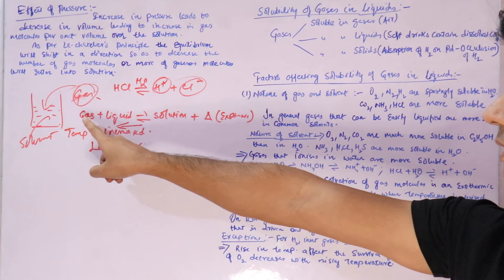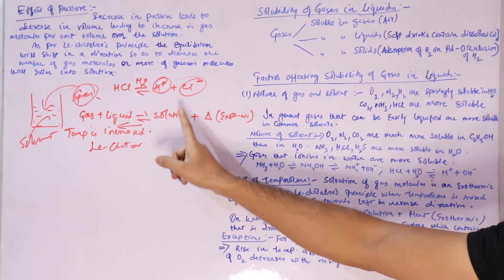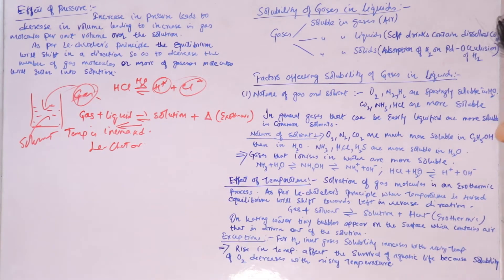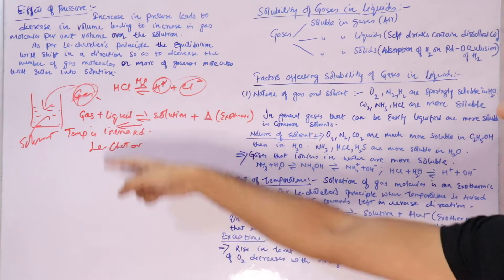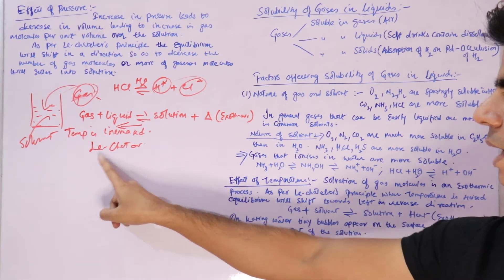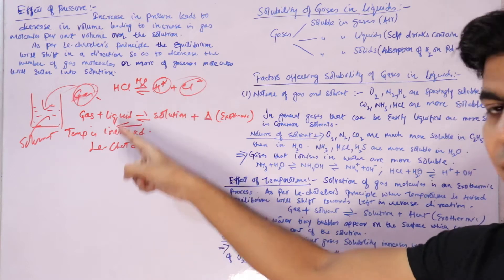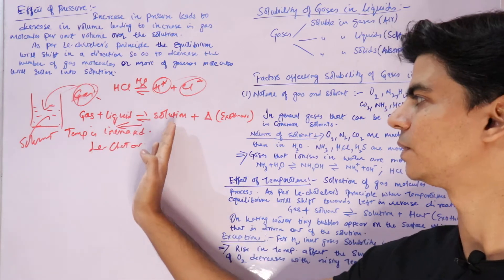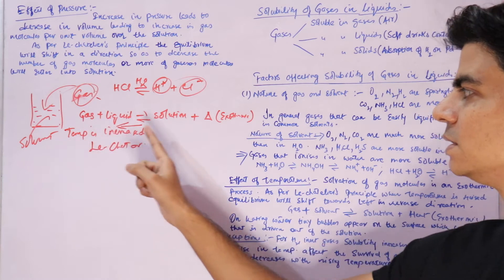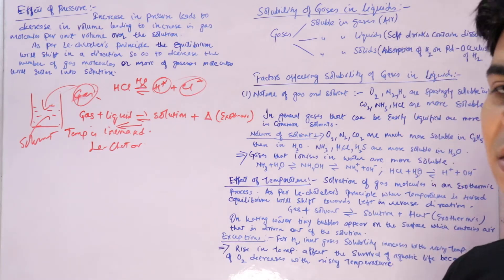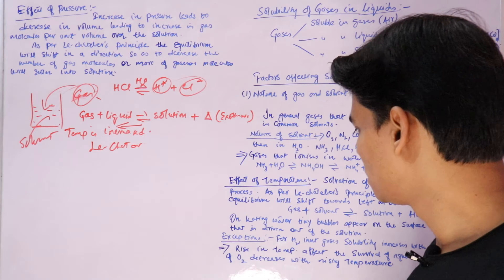To repeat: when gases dissolve in liquid, they undergo solvation in the solvent, and the solvation process is exothermic — heat is given out. When we increase the temperature of this system, as per Le Chatelier's principle, the equilibrium shifts in the direction where heat is absorbed, which is the reverse direction — gas is expelled from the solution, meaning solubility of gas decreases as temperature is raised.